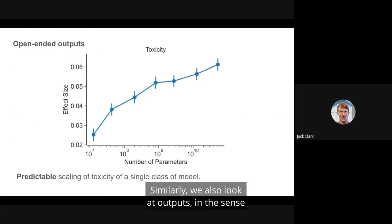Similarly, we also look at outputs in the sense of studying the potential toxicity of model outputs. And here we see that in response to toxic prompts, the toxicity of the output increases as a consequence of scale. That's because the models get more capable. So if we give them bad or harmful inputs, they're more likely to continue them as a consequence of their greater representative capacity as a consequence of scale.